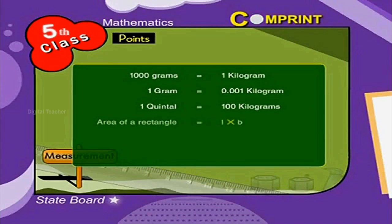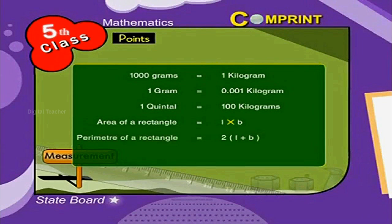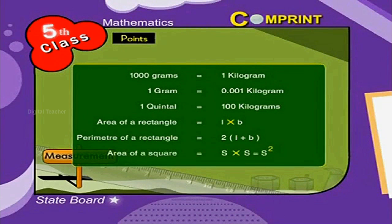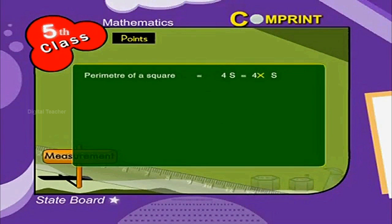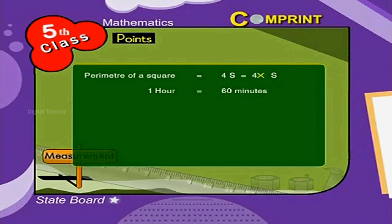Area of a rectangle is equal to l into b. Perimeter of a rectangle is equal to 2 into (l plus b). Area of a square is equal to s into s, that is s squared. Perimeter of a square is equal to 4s, that is 4 into s. 1 hour is equal to 60 minutes. 1 minute is equal to 60 seconds.